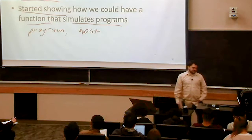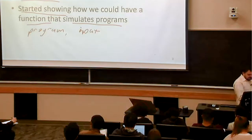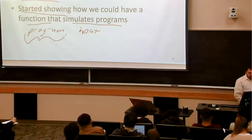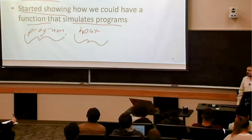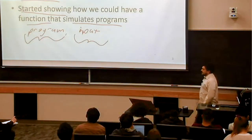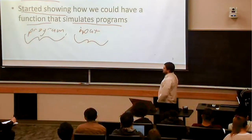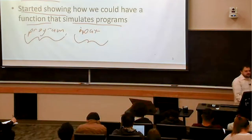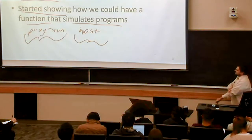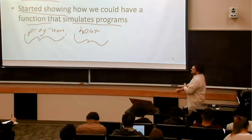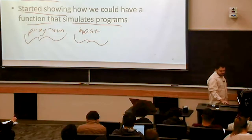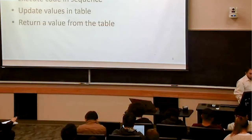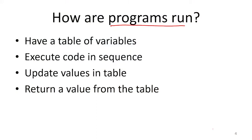So we can define a function that does this. Programs, in the way that we described them, are going to be of finite length. The input is going to be of finite length, so this is going to be a finite function. We should be able to have some circuit which implements this function of doing what the program is supposed to do. What we started with last class is talking about exactly what that function might look like and how we could define it. Our idea was to look at how programs end up getting run to help us implement this function.